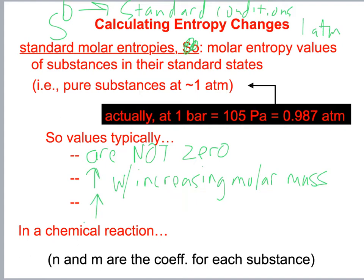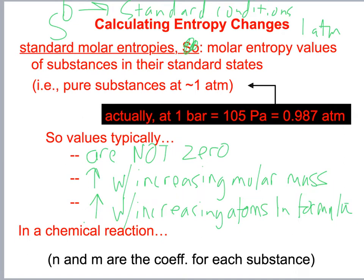They also increase with increasing atoms in the formula. In a chemical reaction, the change in standard entropy is the sum of the entropies of the products minus the sum of the entropies of the reactants.